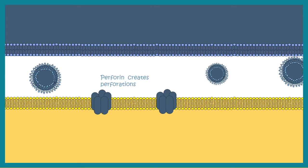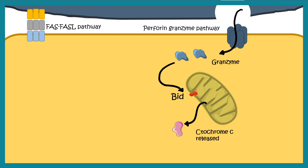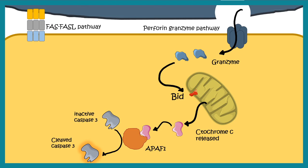Cytotoxic T cells are loaded with granules filled with perforin and granzymes. Perforin creates pores in the target cell membrane, allowing granzyme to enter. Once inside, granzyme can activate BID, a mitochondrial protein involved in the apoptosis pathway. BID allows leakage of cytochrome C into the cytosol, where cytochrome C forms a complex with APAF1, ultimately leading to proteolytic activation of caspase 3 — the executor caspase that drives apoptosis.